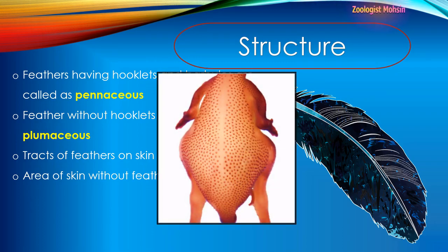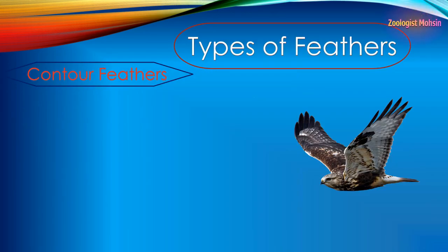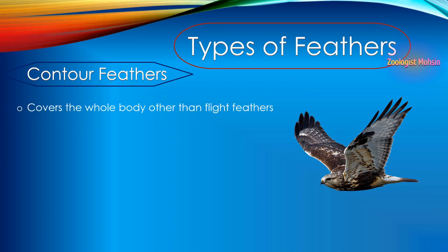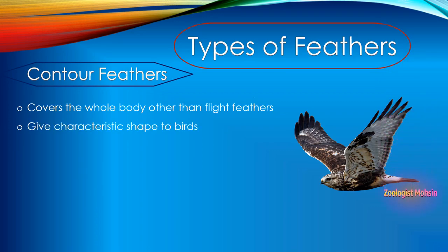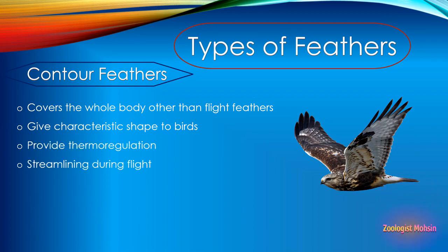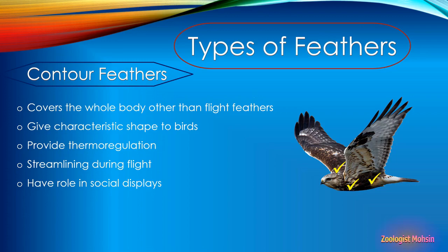In this diagram you can see dots — these dots are basically points of attachment of feathers. You can also observe the pattern of these dots; this pattern represents the tracks of feathers attached to the skin, and they are called pterylae. The smooth area without dots is called apteria. Now, types of feathers. Number one: contour feathers. Contour feathers cover the whole body other than the flight feathers. They give characteristic shape to birds, provide thermoregulation, streamlining during flight, and also have a role in social displays.